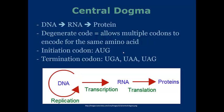It's a degenerate code, which means that it allows multiple codons to encode for the same amino acid. Note that a codon is a three-letter sequence, and each three-letter sequence is going to correspond to a respective amino acid.